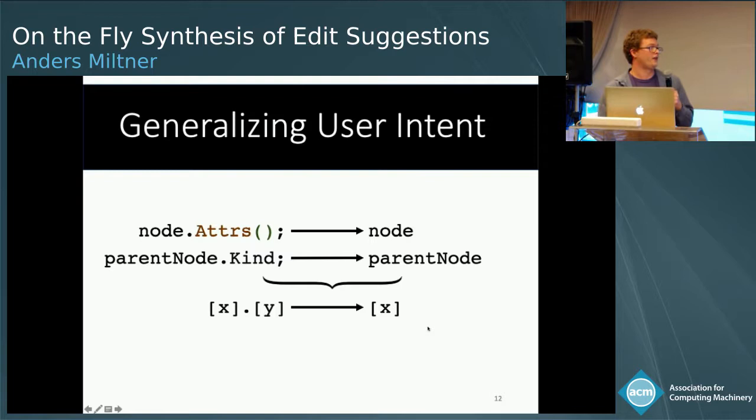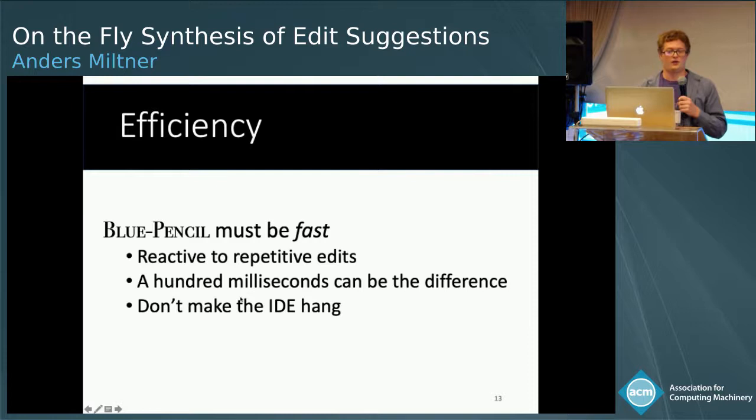That means we could identify spurious repetitive edits. For example, if at some point we delete attrs and another time we delete kind, we might learn the very general transformation of x.y going to x.